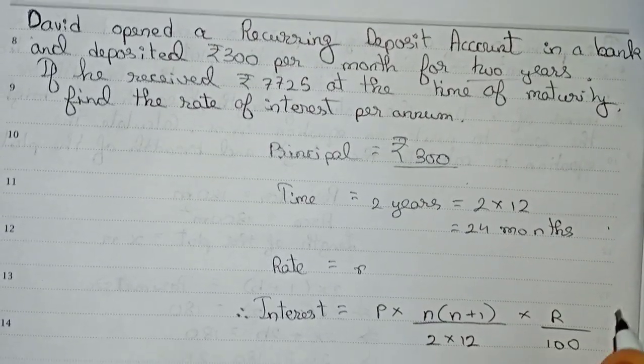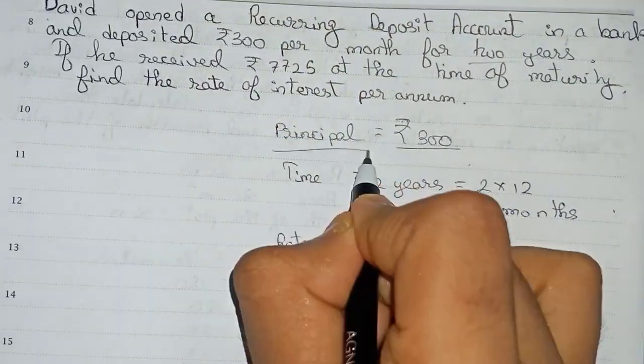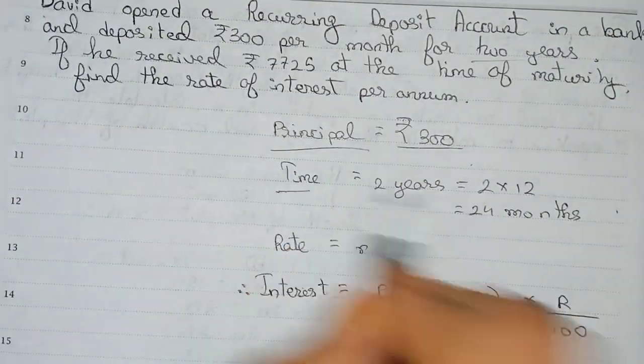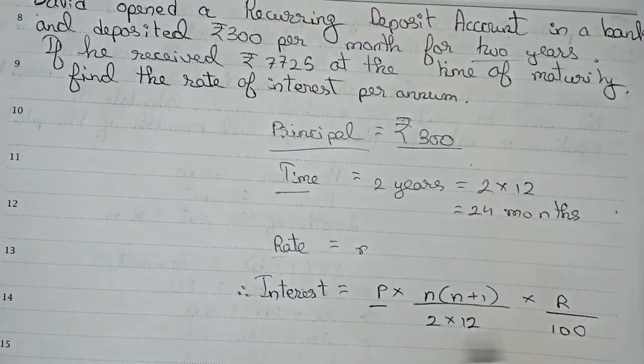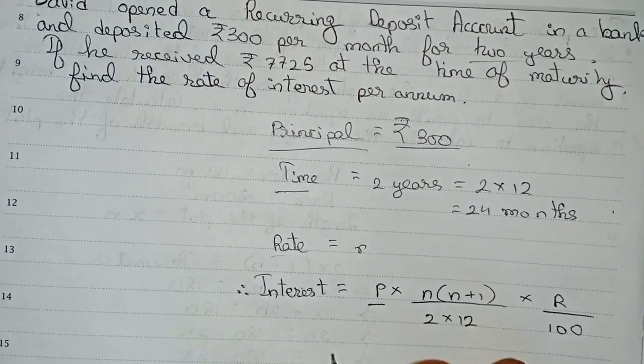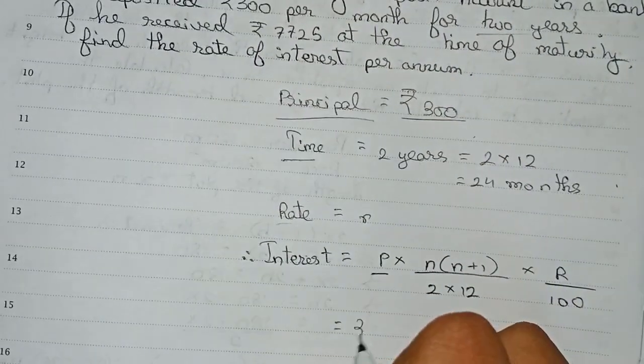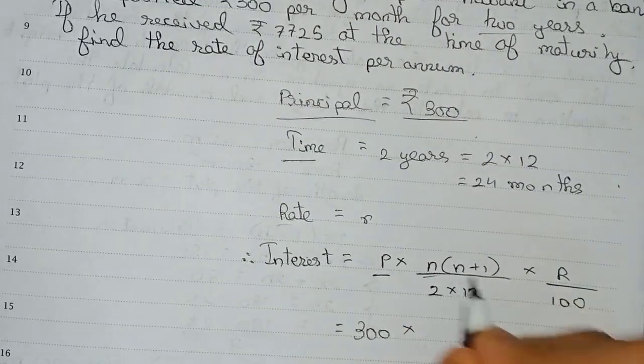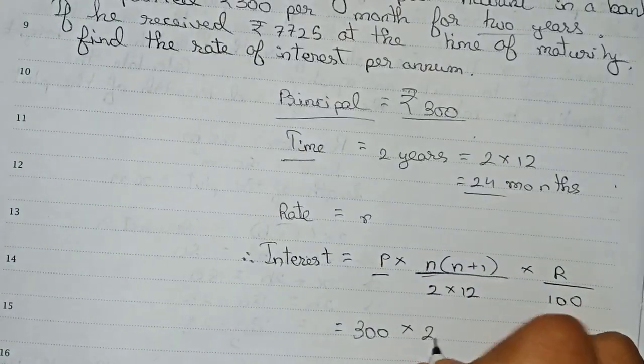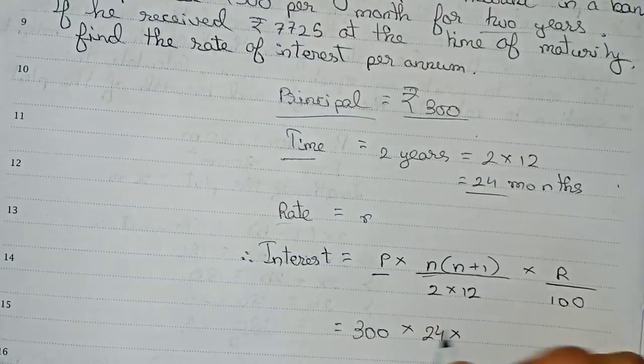The formula is principal into n into (n plus 1) by 2 into 12 into rate by 100. So this is the formula. P is our principal, n is our time, and rate is our rate.